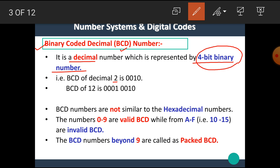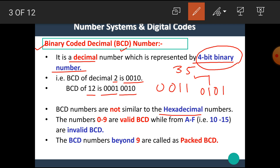For example, BCD of decimal 2 is 0010, BCD of 12 is 0001 0010. Similarly, we can write the BCD of 35 as 0011 0101. BCD numbers are not similar to hexadecimal numbers. The numbers from 0 to 9 are valid BCD numbers, while the numbers from A to F are invalid BCD numbers.